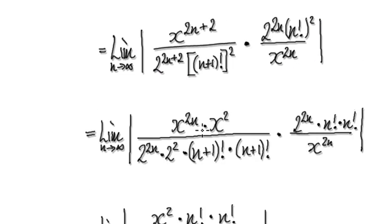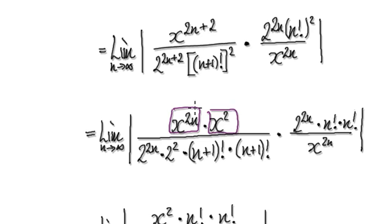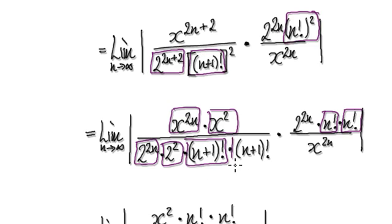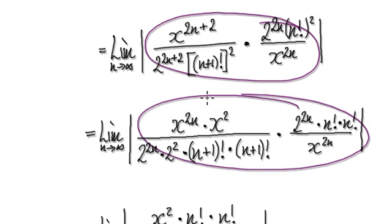Now tidy up even further. Visualize this as one block multiplying another block — this is your 2n and 2n, and this is your 2 and your 2. Then visualize this part as n factorial times n factorial. And visualize this block as one block multiplying another block. Squared means this exact same thing multiplied by itself.